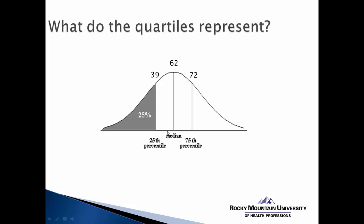We typically use quartiles as a descriptive way to talk about the distribution of scores, but we can also use them as a crude comparison tool. For example, if your score is 39, you can say you scored better than 25% of everybody else, but 75% of people scored better than you. Lastly, we can use quartiles to identify extreme scores — the outlier labeling technique uses the first and third quartiles to calculate cutoff points to determine if a score would be considered an outlier. It's a relatively simple technique to calculate and utilize.